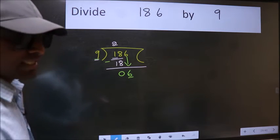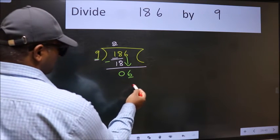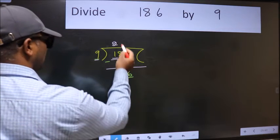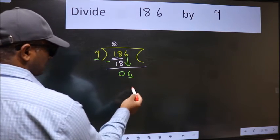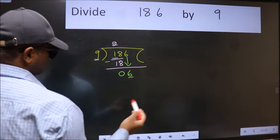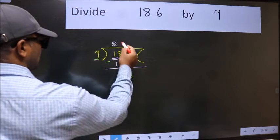So what we should think of doing is which number should we take here. If I take 1, we will get 9. But 9 is larger than 6. So what we do is we take 0.